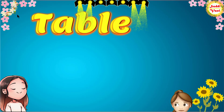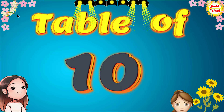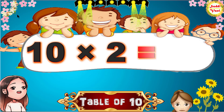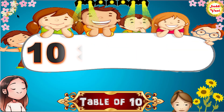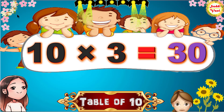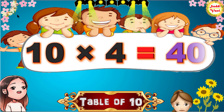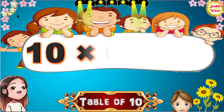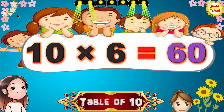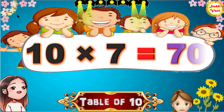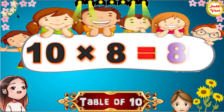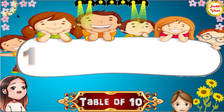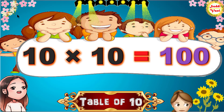Hello children, we will learn table of 10. 10 1's are 10, 10 2's are 20, 10 3's are 30, 10 4's are 40, 10 5's are 50, 10 6's are 60, 10 7's are 70, 10 8's are 80, 10 9's are 90, 10 10's are 100.